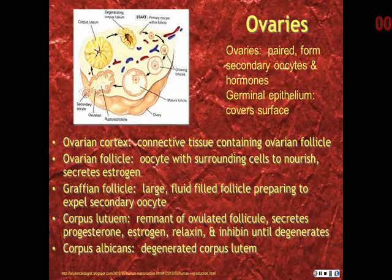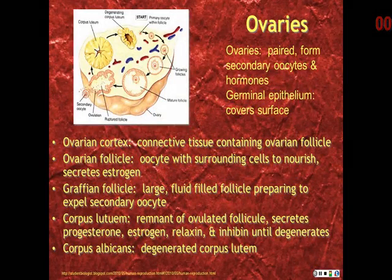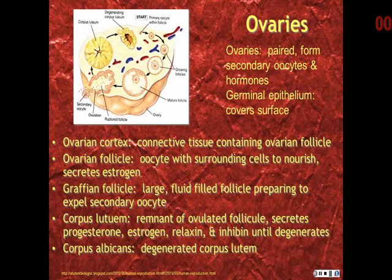The follicle includes the oocyte with surrounding cells to nourish the oocyte and secrete estrogen. The large fluid-filled follicle which will expel the secondary oocyte is referred to as a Graafian follicle.